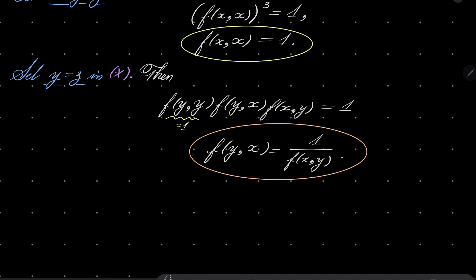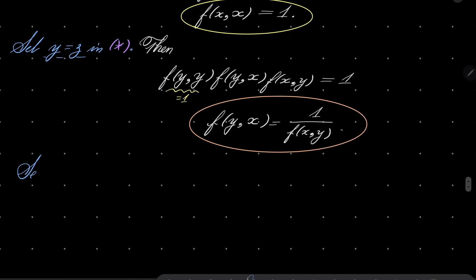Of course, our function cannot take the value of 0 because we will get a contradictory equation 0 equals 1. And now, finally, let's set z to be x plus 1 in our equation asterisk. One last time.